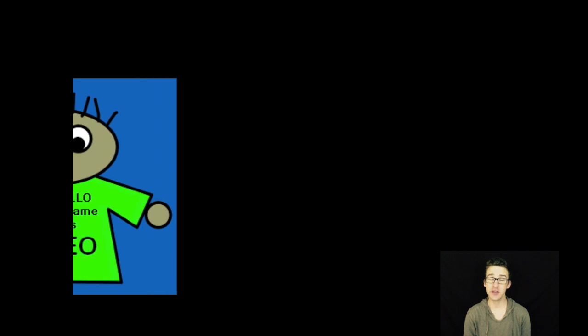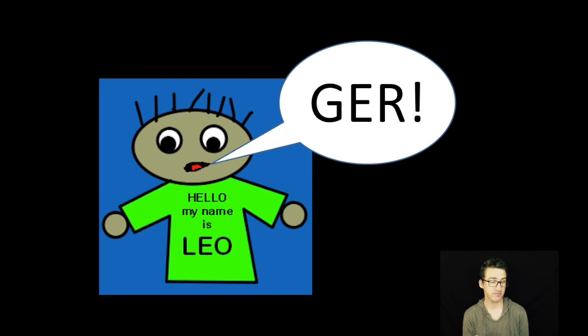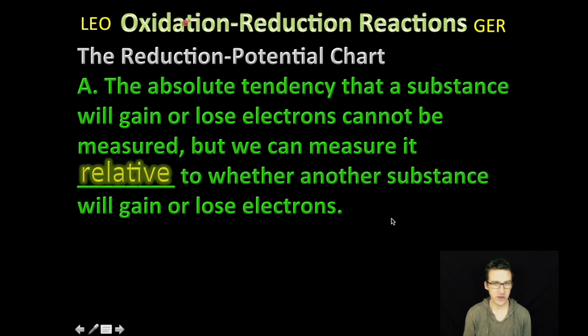So as we work through this video, don't forget our good friend Leo. Okay, so first, it turns out that the absolute tendency that a substance will gain or lose electrons cannot be measured. But we can measure it relative to whether another substance will gain or lose electrons.